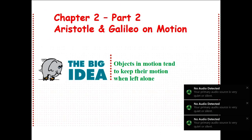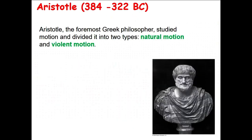Chapter 2, Part 2: Aristotle and Galileo on Motion. Aristotle, a famous Greek philosopher, studied motion and according to him divided motion into two types: natural motion and violent motion.